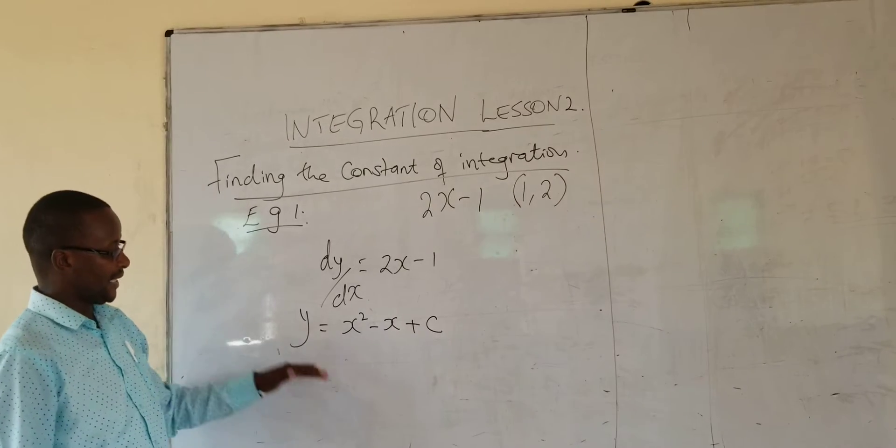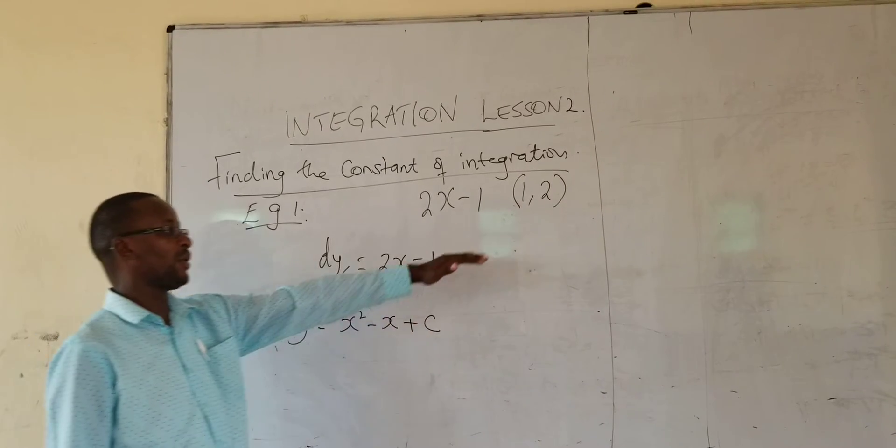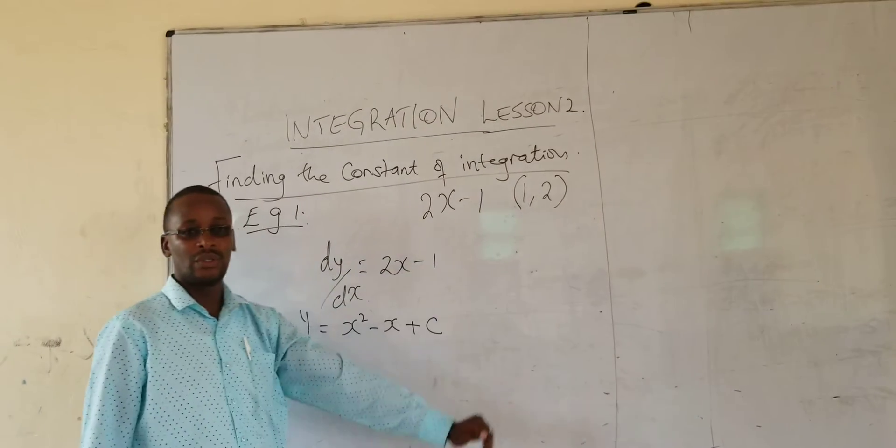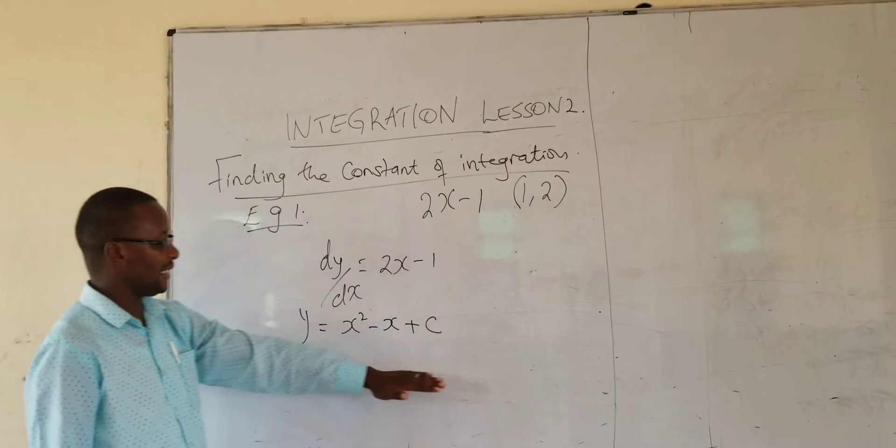We are told this curve passes through the point (1, 2). So when x is 1, y is 2. So you substitute this in this equation here.